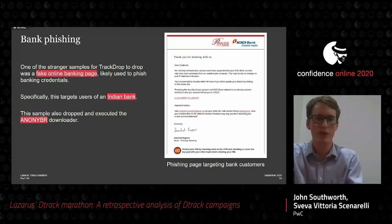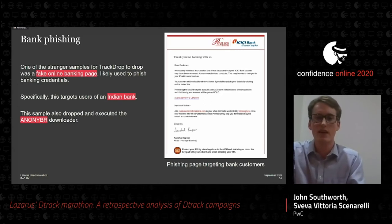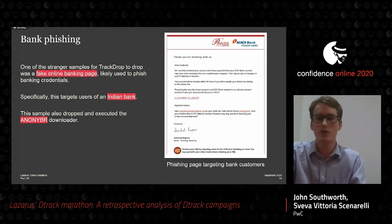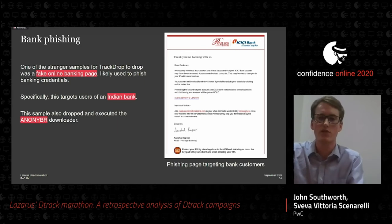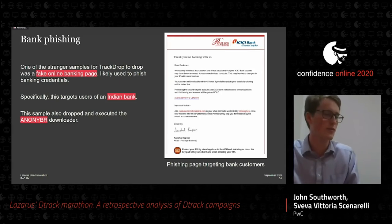This is where some TrackDrop-dropped samples get unusual. We observed TrackDrop dropping an HTML page masquerading as a banking page for an Indian bank, claiming the user's account was compromised and requesting their details — targeting bank customers, with no evidence of targeting the bank itself. It is highly likely that following the 'click here to update' link would result in credential or financial information phishing. Even more unusually, this same TrackDrop sample also dropped a sample we call the AnonyBird Downloader.